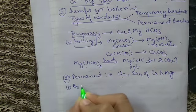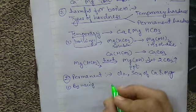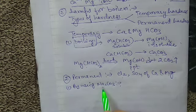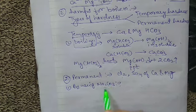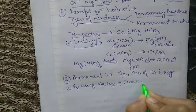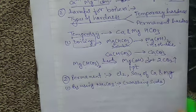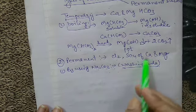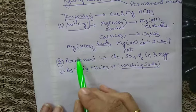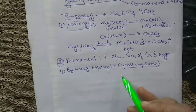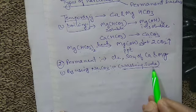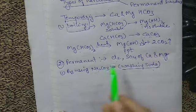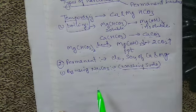The first technique is by using Na₂CO₃, which is sodium carbonate — also called washing soda. We can remove permanent hardness by the use of washing soda. When hard water is treated with washing soda, the soluble chlorides and sulphates of calcium and magnesium get converted into their insoluble carbonates, which can then be filtered off.